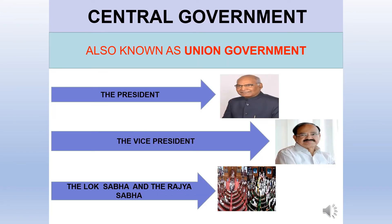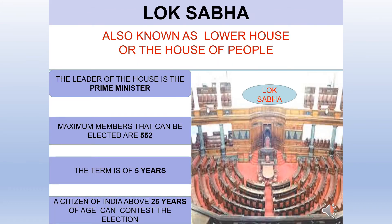In India, there is a dual government — the central government and the state government. The central government is also known as the union government. It comprises the President, the Vice President, the Lok Sabha and the Rajya Sabha. The Parliament has two houses: the Lok Sabha and the Rajya Sabha. Let us talk about the Lok Sabha first.